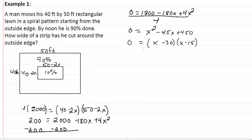So that means we get x is equal to 30 and 15. Now if we put 30 back into our, like say 50 minus 2 times 30, we get a negative number. So that means 30 is out and so that means our solution then is that he's cut a 15 foot strip all the way around.